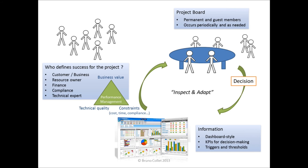Thanks to that, we can enable effective decision-making and effective product governance. We provide the right information at the right time to the project board, and they can provide a decision. This decision will trigger a number of actions at project execution level, and in turn, this will change the KPIs and metrics of the project. This cycle is often called the inspect and adapt cycle. Here we see clearly how these three major components interact together to enable product governance.